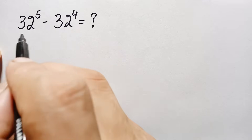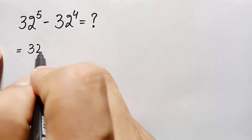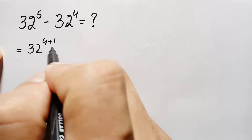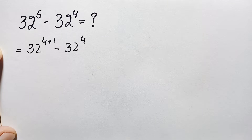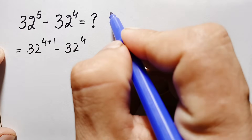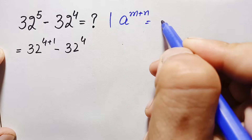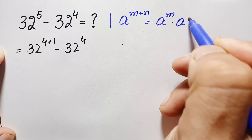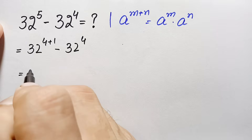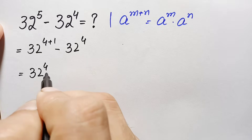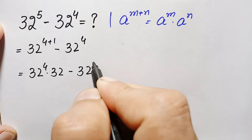How can we solve this math problem? First of all, we can rewrite the first term: 32 raised to power 5 can be written as 32 raised to power 4 plus 1, minus 32 raised to power 4. In the first term we will use the exponential identity: a raised to power m plus n equals a raised to power m times a raised to power n. So using this identity, the first term becomes 32 raised to power 4 times 32 raised to power 1, or simply 32, minus 32 raised to power 4.